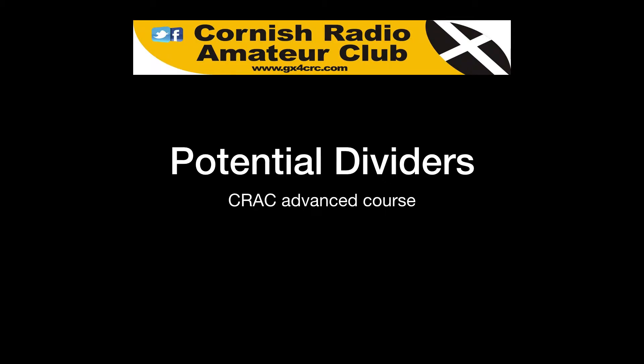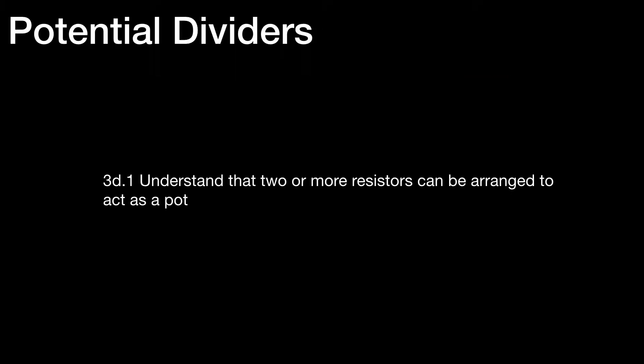Hello and welcome once again to this series of slide videos for the RSGB advanced course arranged by the Cornish Radio Amateur Club. Today we're going to be looking at potential dividers. The syllabus reference is 3D1: understand that two or more resistors can be arranged to act as a potential divider and apply the formula. We'll look at the formula at the end of a discussion about potential dividers.